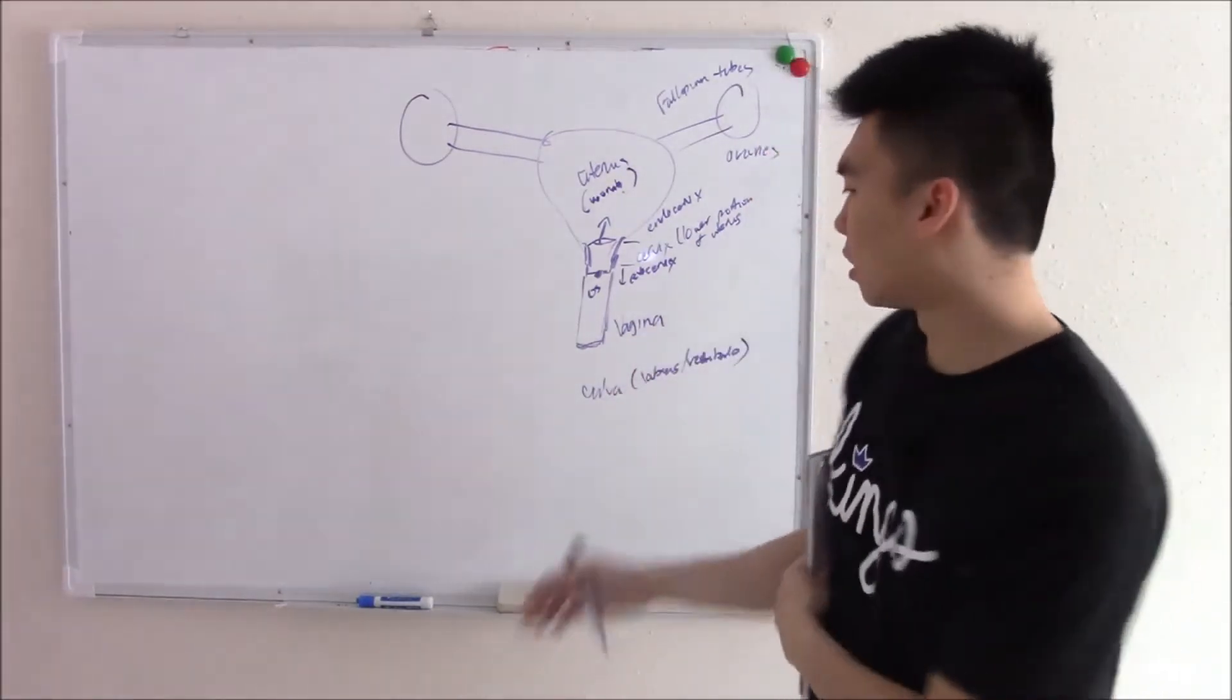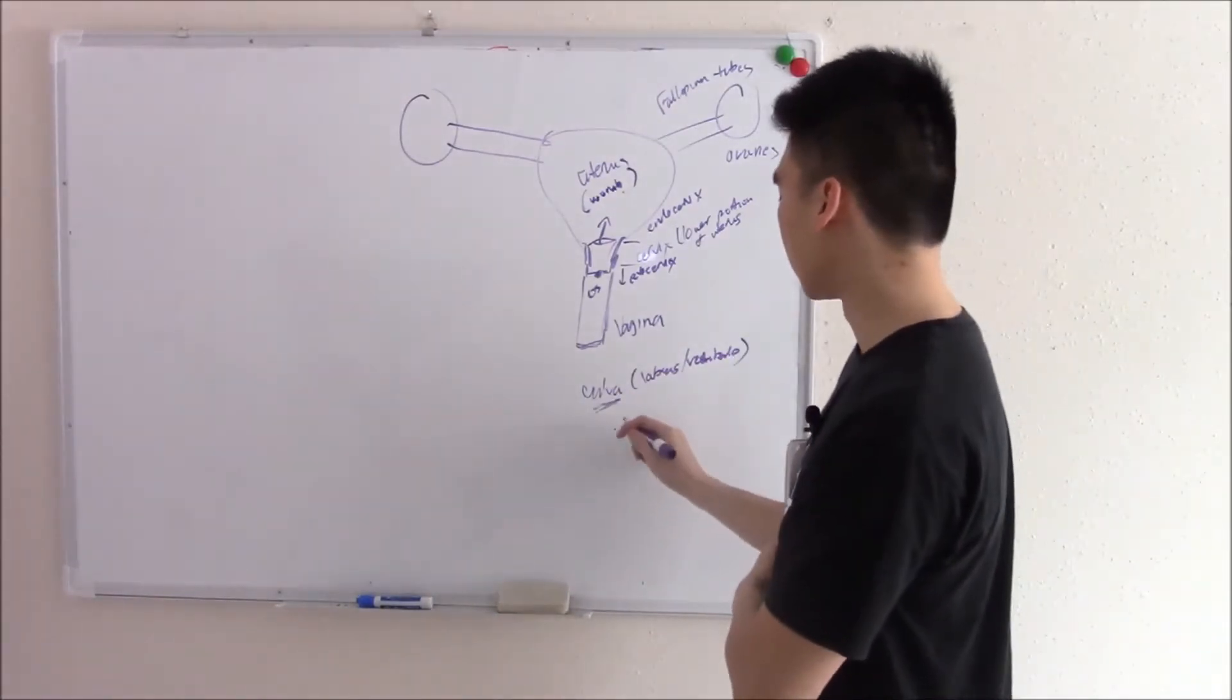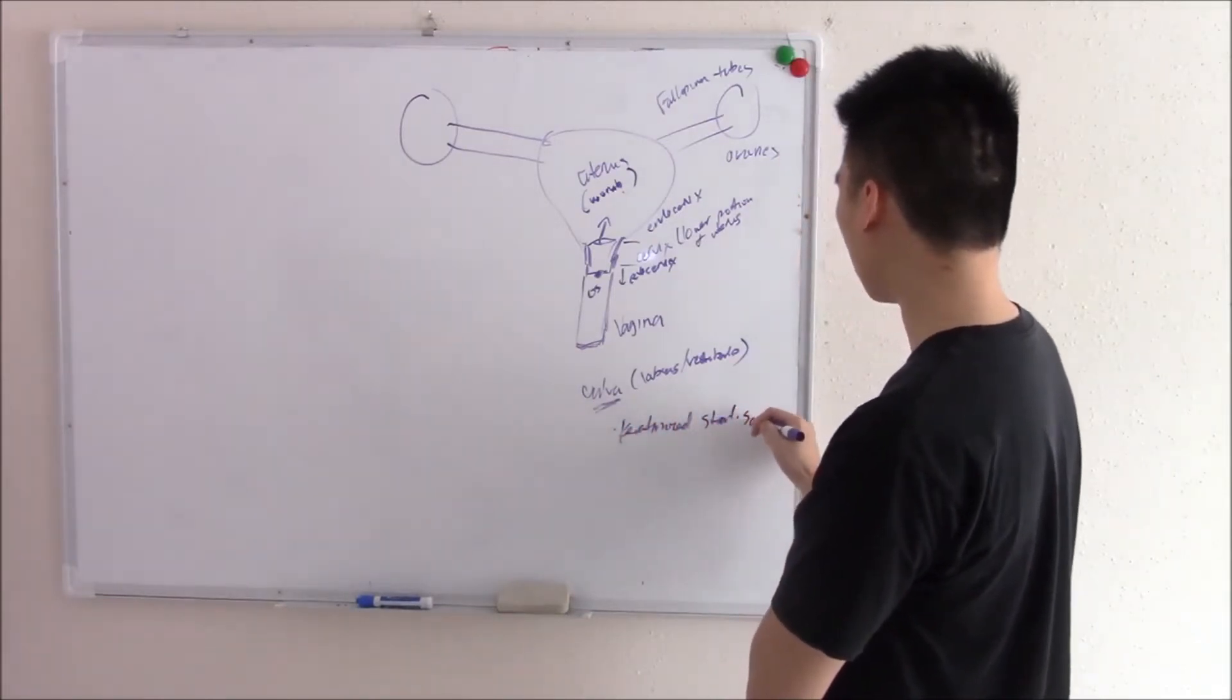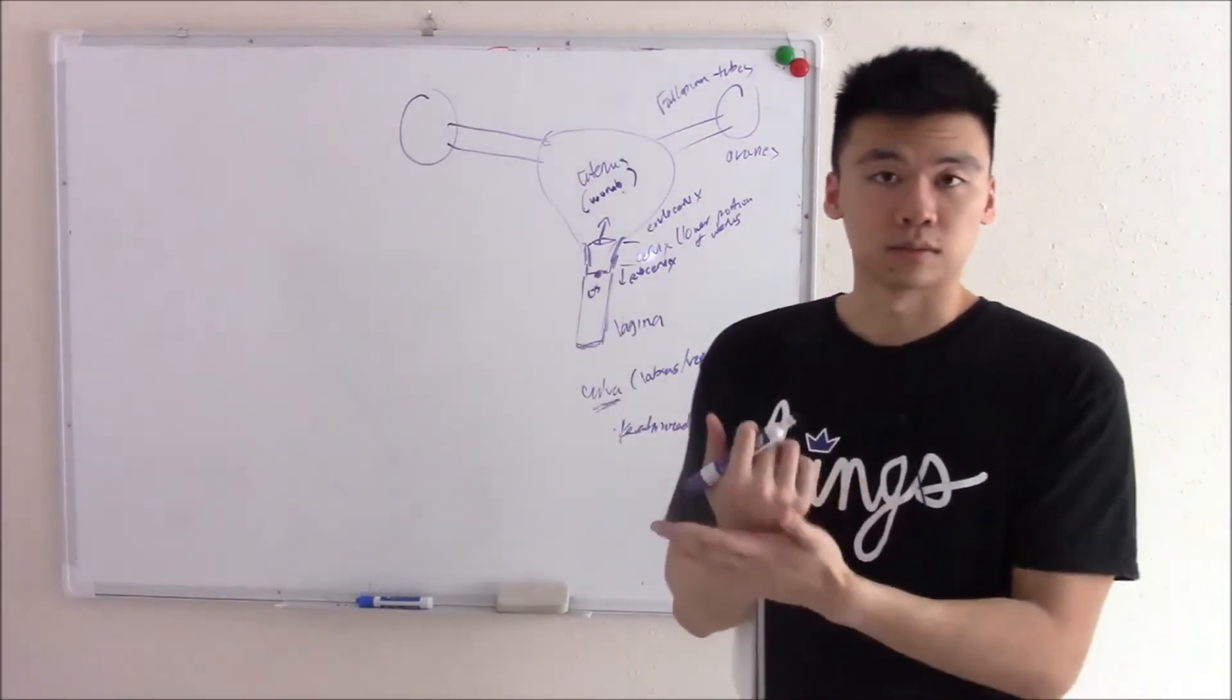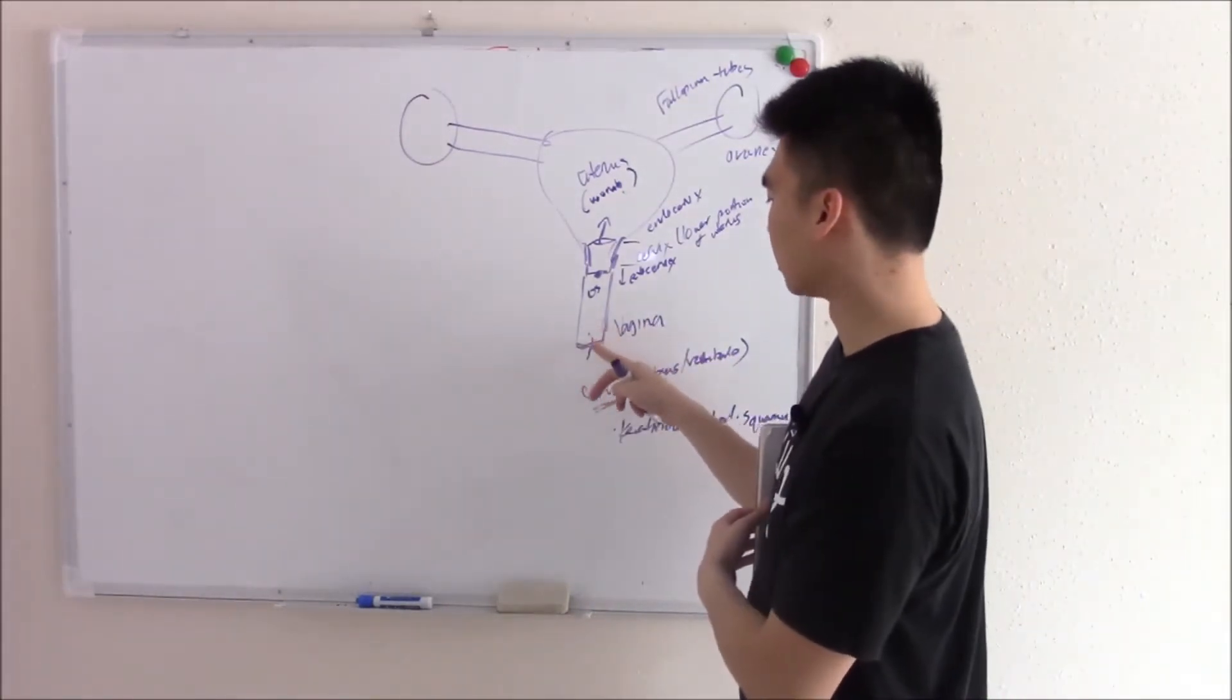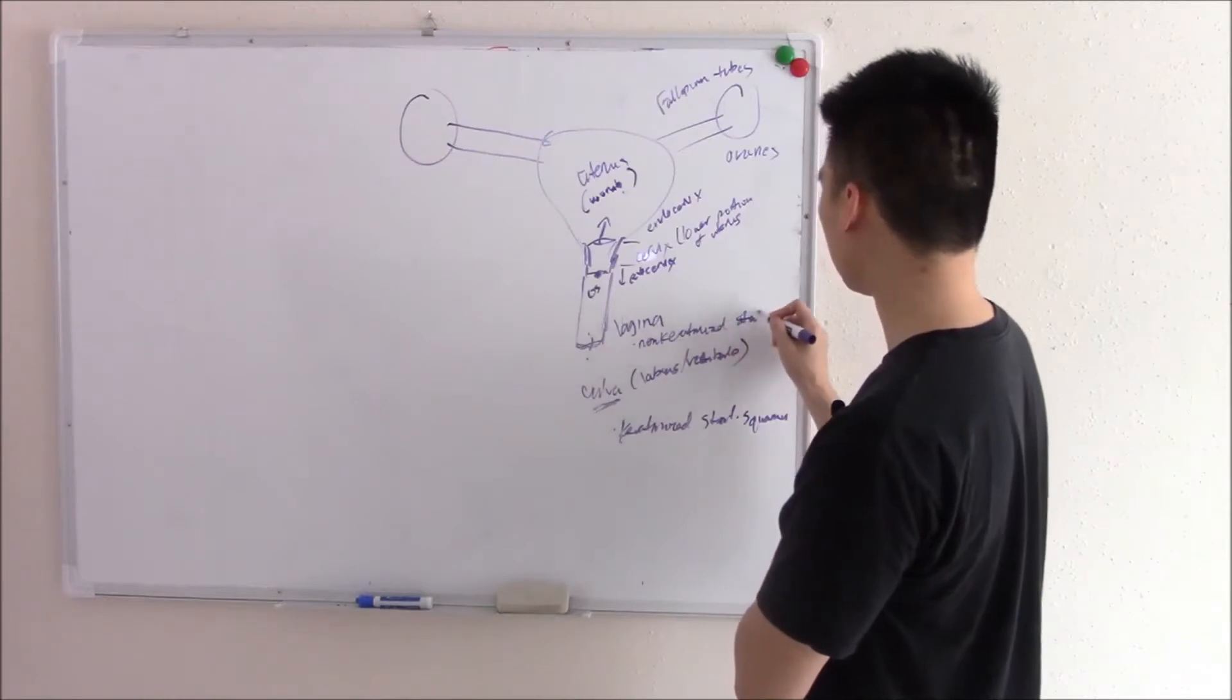So what is the epithelium normally? Well, we'll start from the outside. Your vulva is your outside skin and like your outside skin, it is keratinized stratified squamous, just for protection. Once we move inside to the vagina, we lose that keratin. So it becomes non-keratinized stratified squamous.